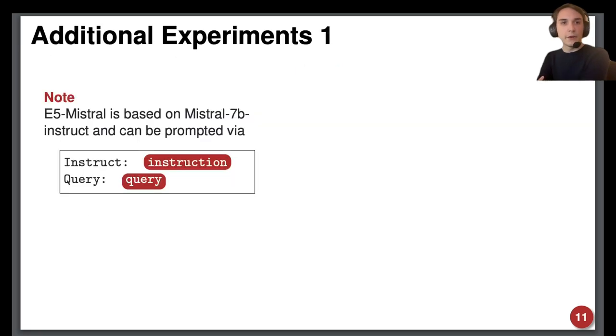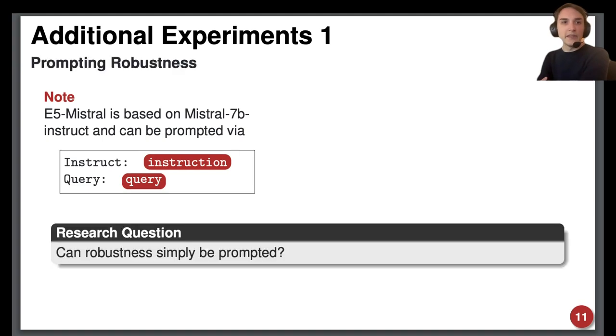To investigate further how general robustness may be improved, we noted that today's LLMs exhibit impressive zero-shot effectiveness on natural language tasks. Given that E5-Mistral is based on an Instruct LLM and can be prompted, we investigated if simply prompting for robustness can help.